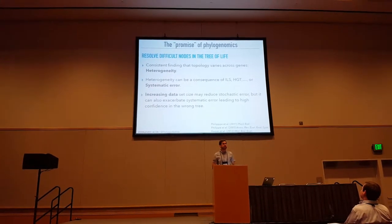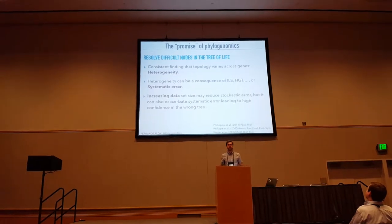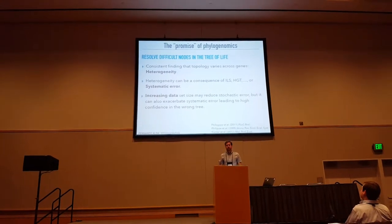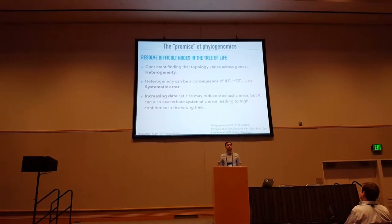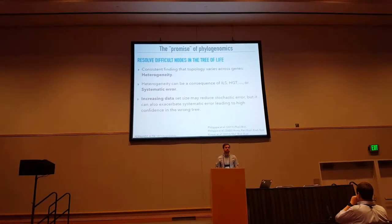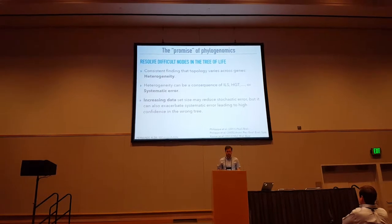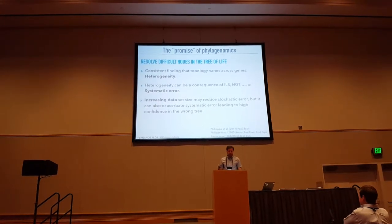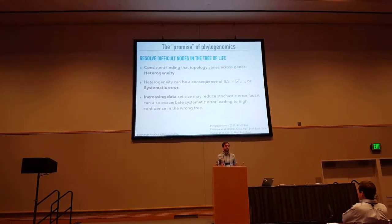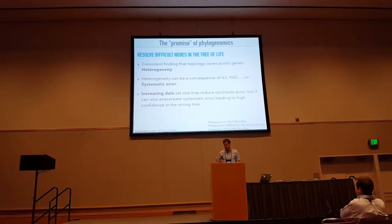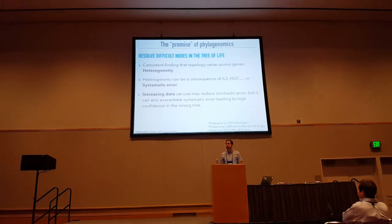Phylogenomic studies are consistently showing us a great deal of variation in gene tree topologies, and how this heterogeneity can be, in the case of systematic error, a real problem for species tree inference.